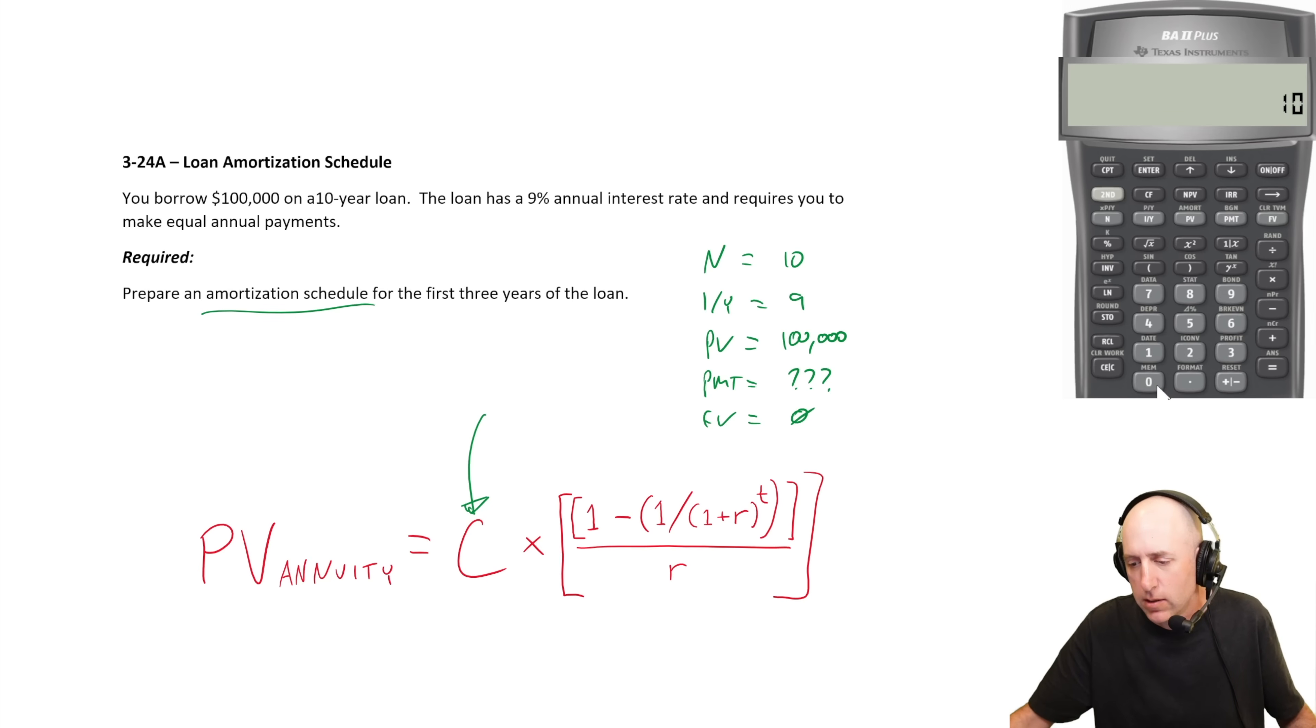So let's solve. 10 goes in as N, nine goes in as I/Y, a hundred thousand positive goes in as PV, zero goes in as FV and I'm going to compute PMT. I get PMT of 15,582.00, well, I guess 0.01. I'm just going to leave it 15,582.